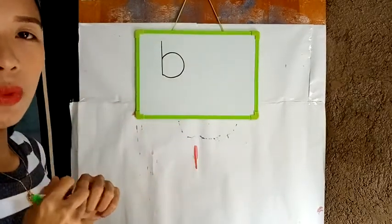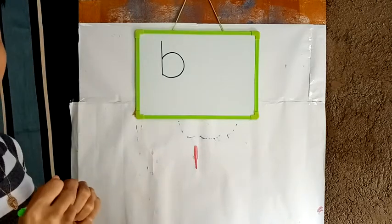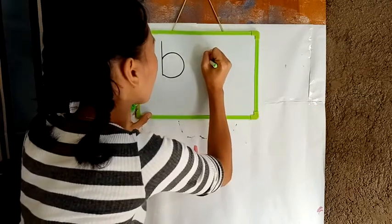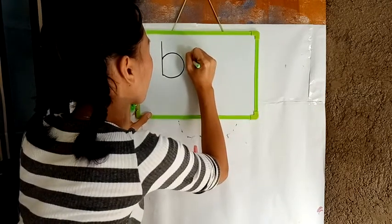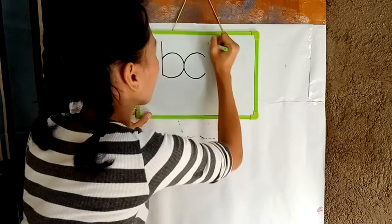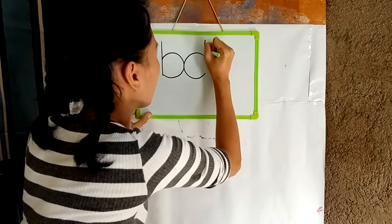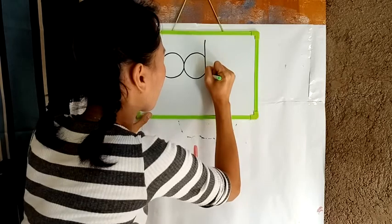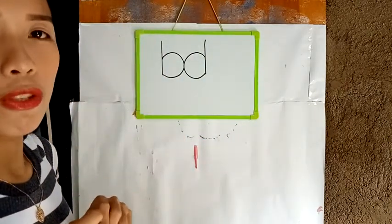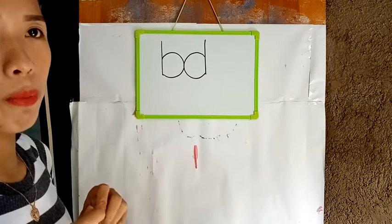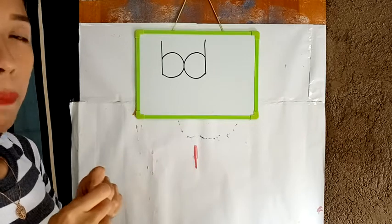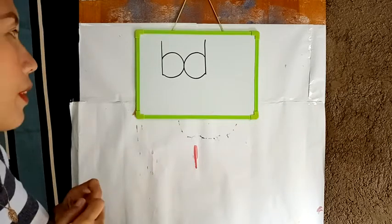The next thing that we are going to draw is a small letter D. But please, when you are going to draw, make your drawing bigger — big enough to be seen and enough to have colors applied right after.